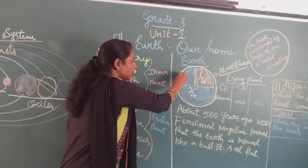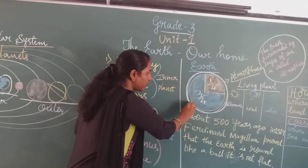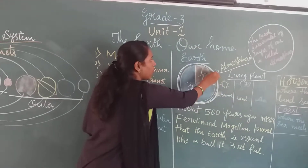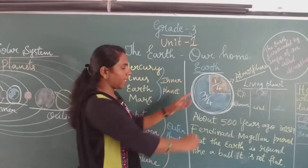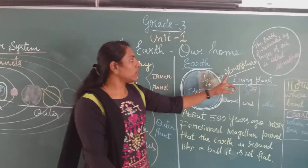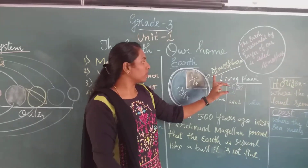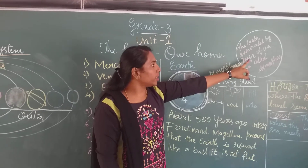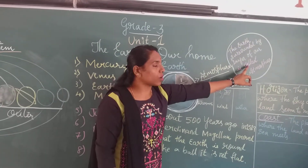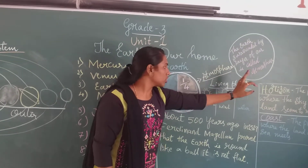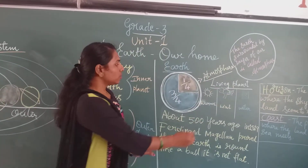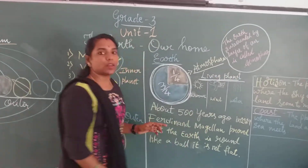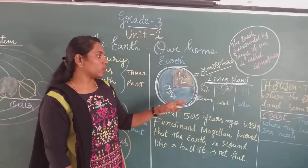This earth is surrounded by a layer of air. This is called atmosphere. The earth is surrounded by a layer of air, and it is called atmosphere. So we will say that earth is a living planet or a unique planet.